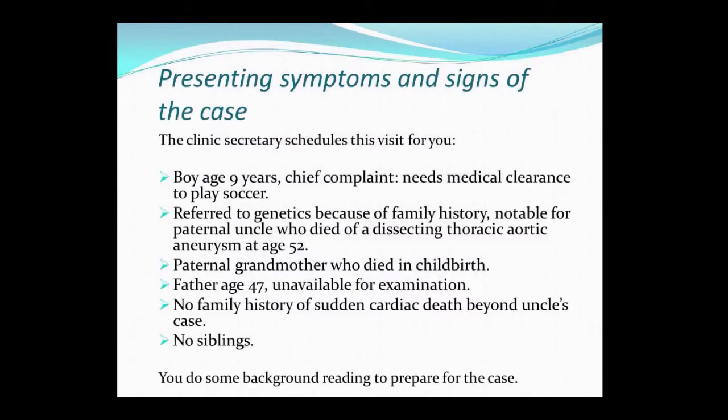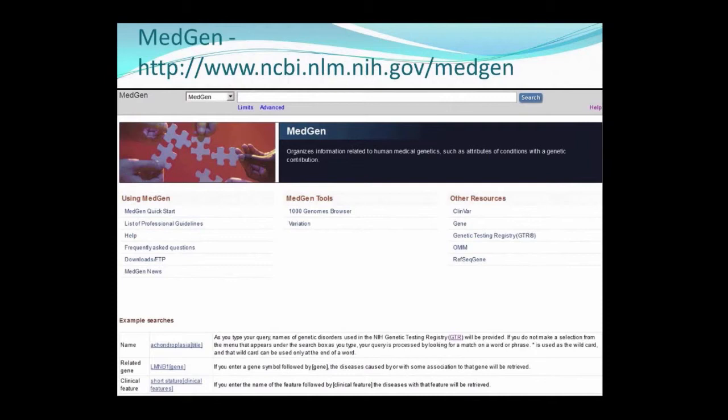We're going to follow a case example through the testing lifecycle to help illustrate how to use the presented resources. Today's case involves a nine-year-old boy who is referred to genetics after a routine sports physical uncovers a concerning family history, with a paternal uncle with sudden cardiac death at age 52, and a paternal grandmother who died during childbirth. So you decide to start researching conditions that are possibly correlated with an aortic dissection. To do so, I'd like to introduce you to MedGen.